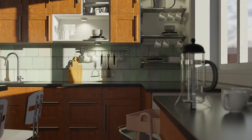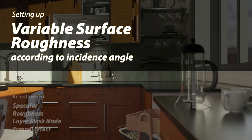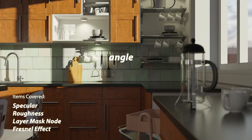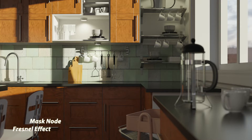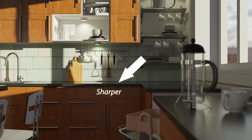In this tutorial, I'm going to show you how to produce a reflectance effect that is very common in the real world, but Blender's default material system doesn't support it unless you configure it. If we look at the countertop in this kitchen scene, which is a Cycles render, you can see that there is variability in the roughness of the surface — down here compared to over here — and this is actually a physical effect that happens in the real world.